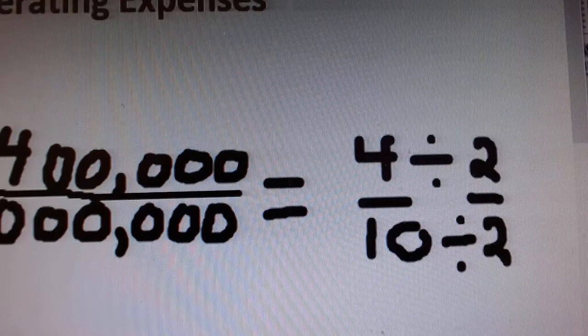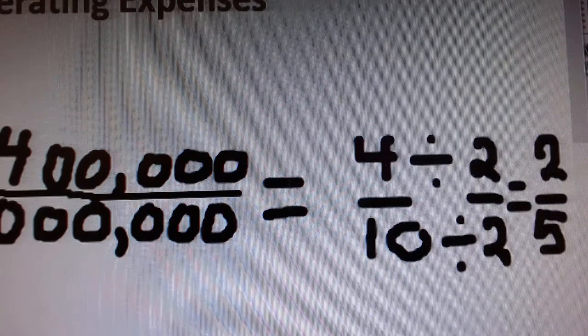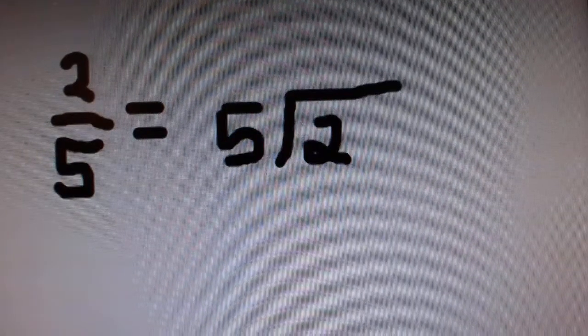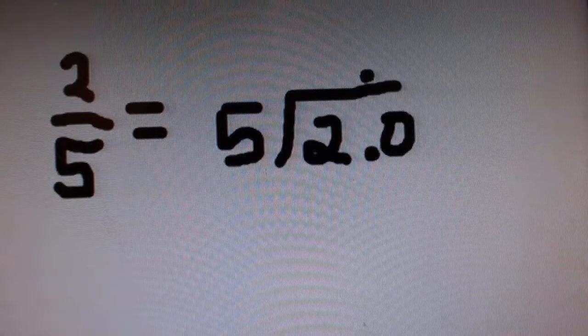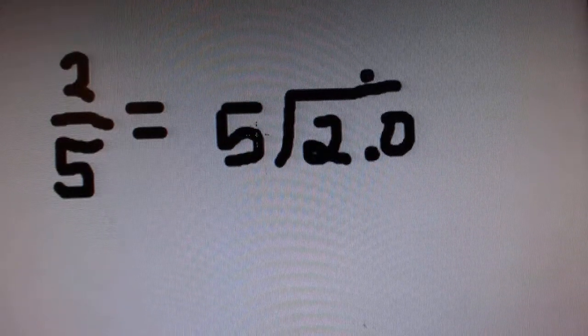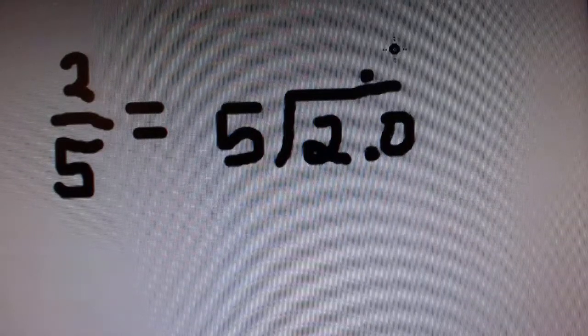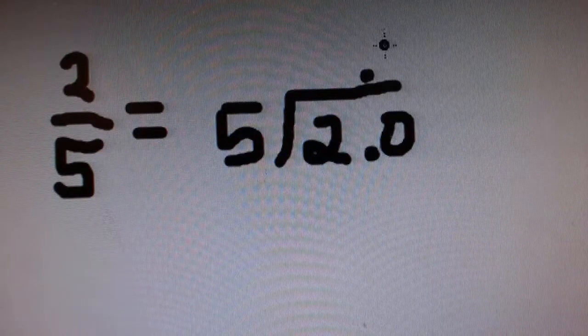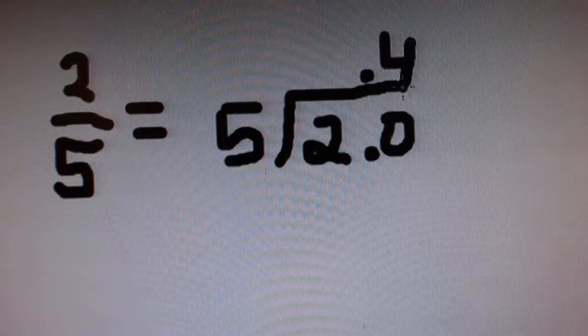Next, you can turn two-fifths into a percentage. First, turn two-fifths into decimal by dividing the numerator by the denominator. Notice I added a decimal, inserted a zero, added a decimal on top. And 20 can be divided by 5 at least four times, because 4 times 5 is 20.